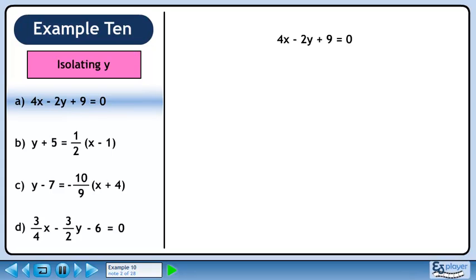In part a, we want to get y by itself in the equation 4x minus 2y plus 9 equals 0.